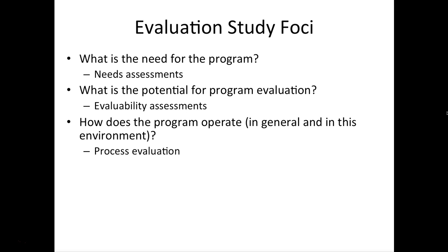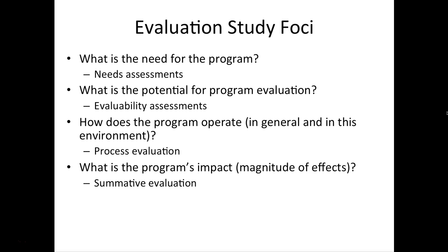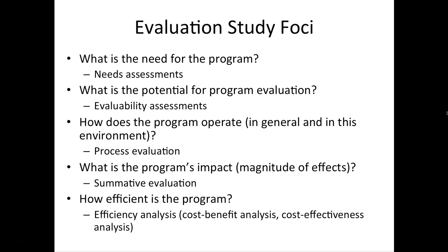We can conduct a process evaluation to get a better sense of how the program was implemented. The main pieces of evaluation research then address what the program's impact is and what the magnitude of the effects are — that's a summative evaluation. We also consider how efficient the program is: cost-benefit analyses and cost-effectiveness analyses ask what the benefits are, how much they cost, and how much we're saving. Even if a program is effective, we need to ask whether it required moving mountains to get that effect and if that's feasible going forward.